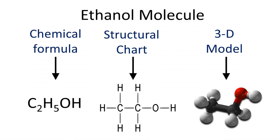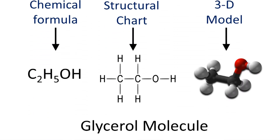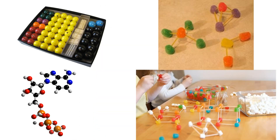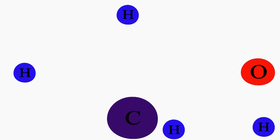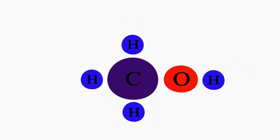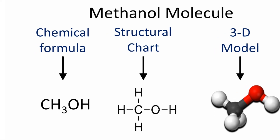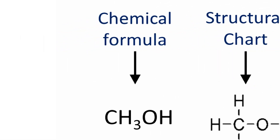After reading the description and looking at the models of each molecule, we will construct a model of that molecule using the molecule building kit or gumdrops and toothpicks. The first model we will construct is a model of a methanol molecule. Methanol is the most commonly used alcohol in biodiesel production and is the simplest alcohol, with the formula CH3OH.